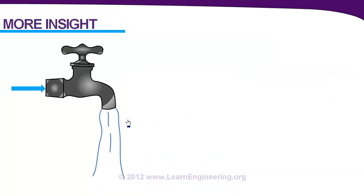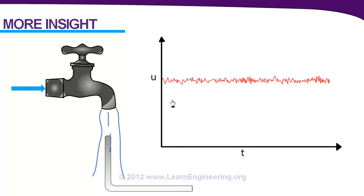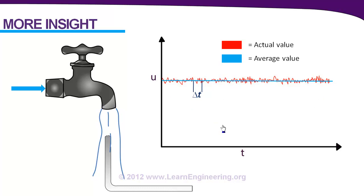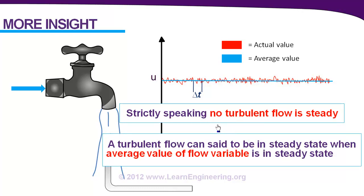We have taken a case which is turbulent in nature, and assume we are giving a constant flow rate input. So we expect the velocity at the outlet to also be constant with respect to time. Let's put a probe in the flow and measure the velocity. Here is a surprising result: we expected the velocity to be constant, but it is rather unsteady and highly fluctuating. This is one big property of turbulent flow — flow is always unsteady. However, if you perform averaging over a time interval delta t, you can see that the averaged value is steady. The blue line represents the averaged value. Strictly speaking, no turbulent flow is steady; a turbulent flow is in steady state only if the averaged value of the flow variable is in steady state.